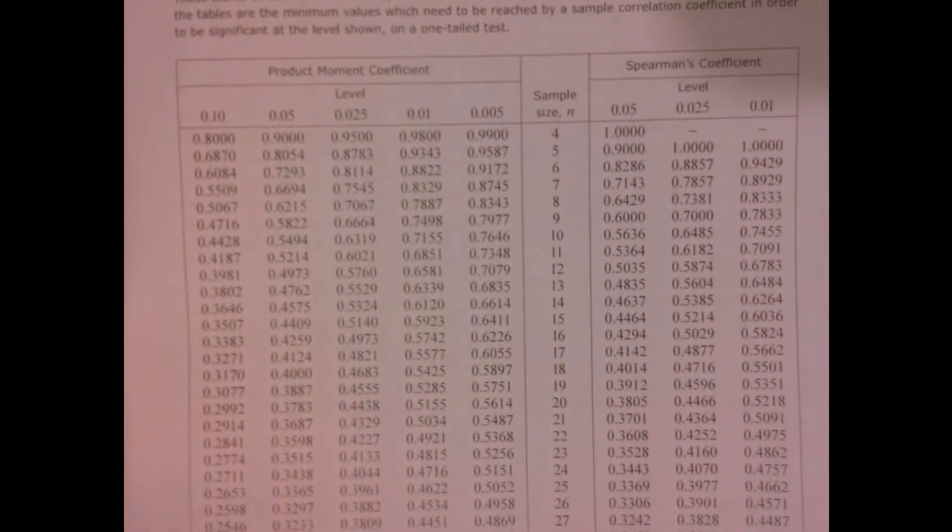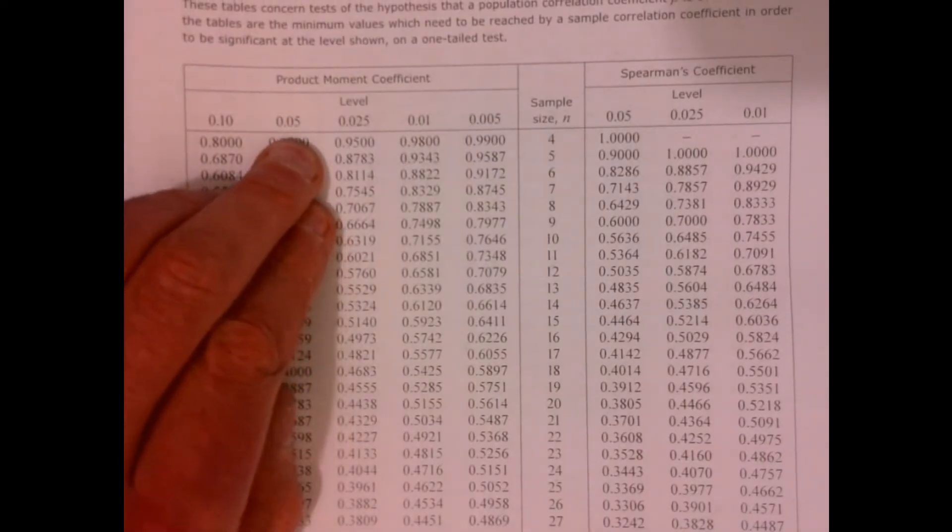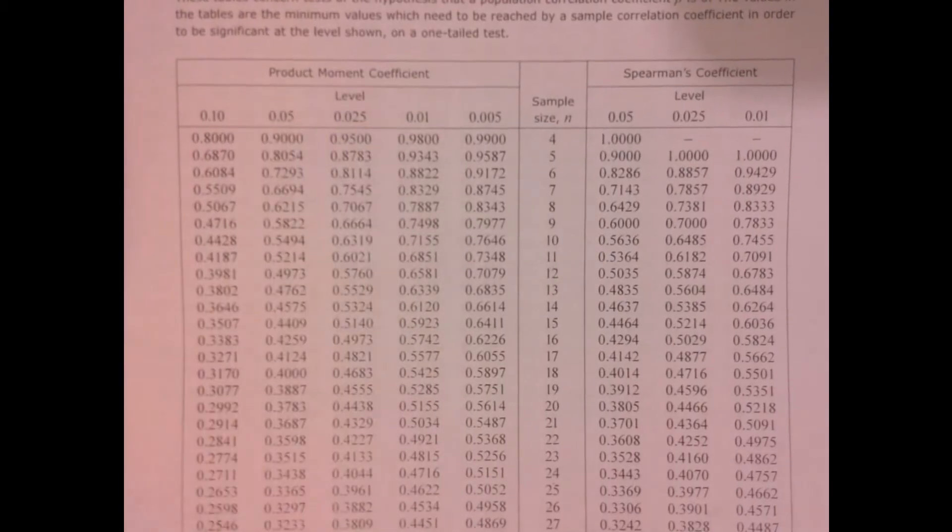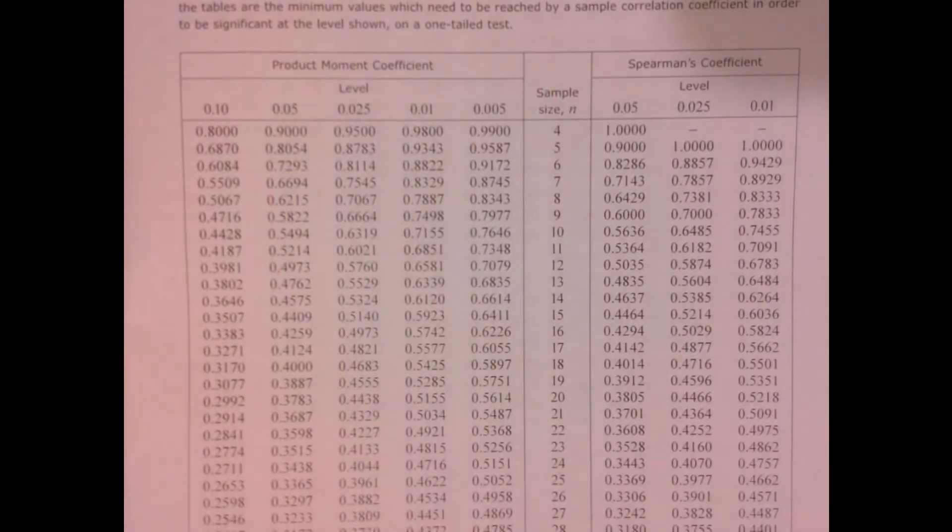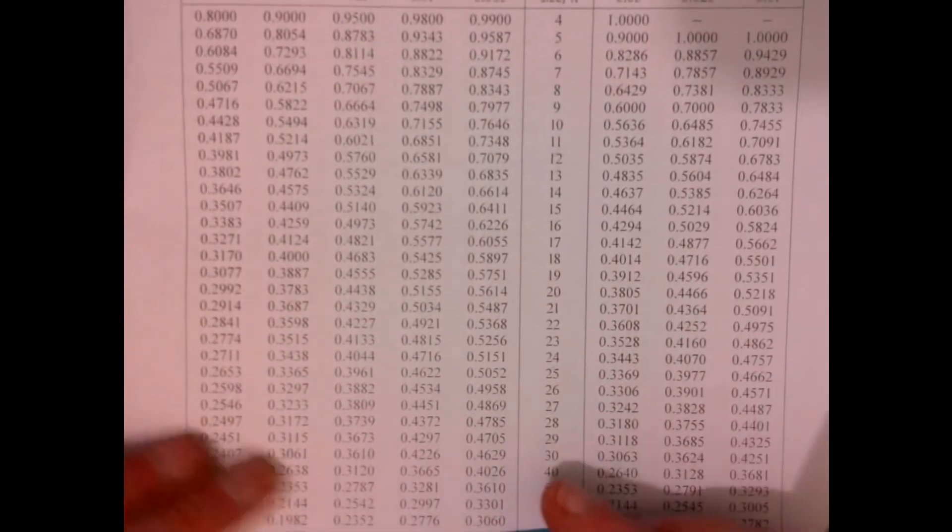We're given that correlation value, so we need to look at the table of values. I've got a big table just here. The column we're going to look at is not 5%, it's this one because it's a two-tailed test. We're looking at effectively 2.5% - imagine that 5% being split between the two. Then we just go down to 30.